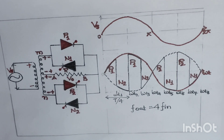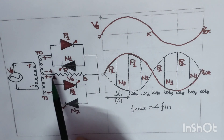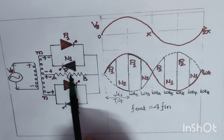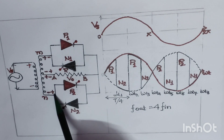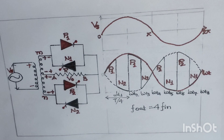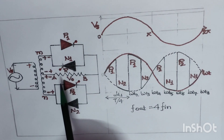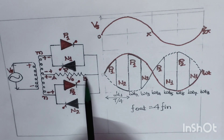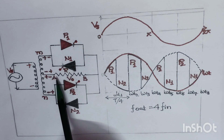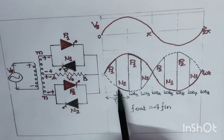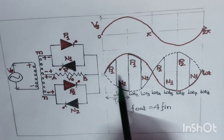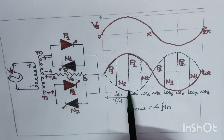At ωt1, we apply a trigger pulse to thyristor N2. Current flows from the positive terminal from A to B and comes back through thyristor N2 to the negative. In this case the current direction is reversed — flowing from A to B — whereas previously it was flowing from B to A. From ωt1 to ωt2, a negative output voltage is received.